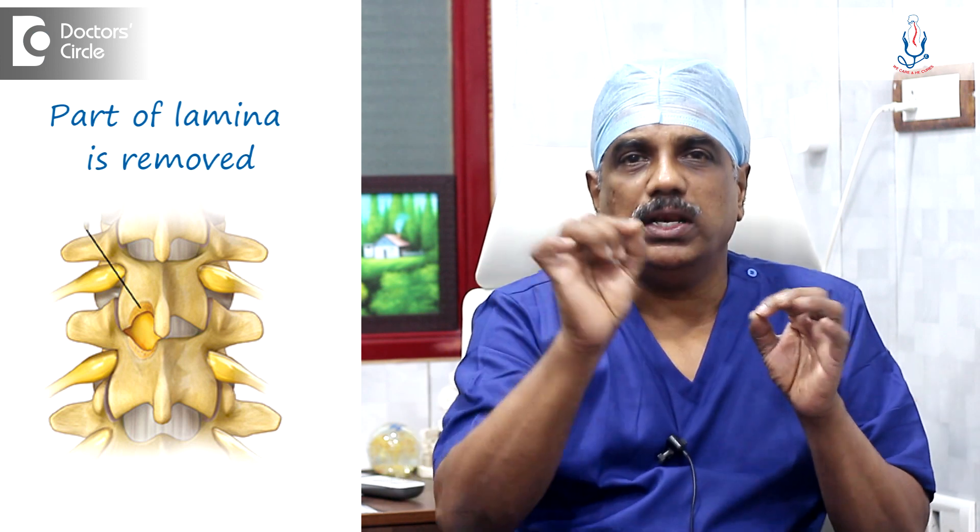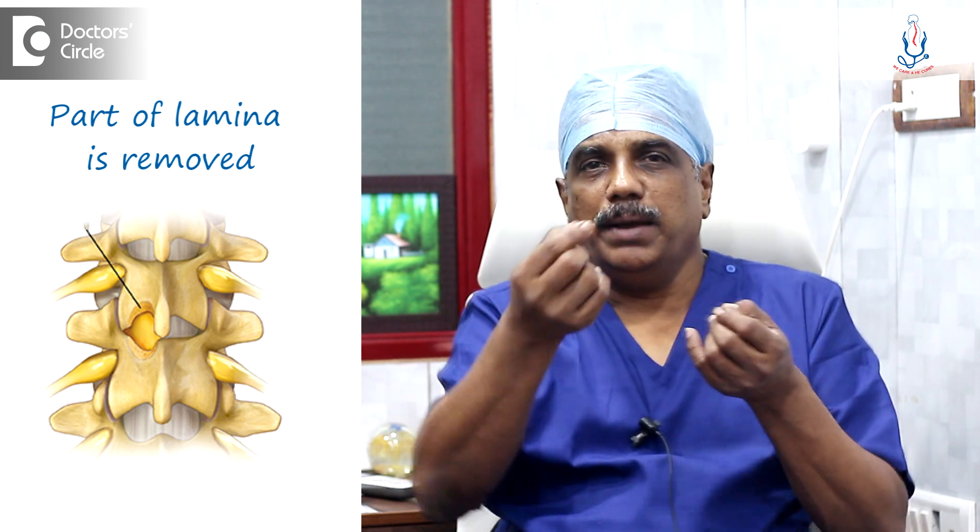So microdiscectomy — we usually use a microscope. Using the microscope, we go in a minimally invasive approach and we just remove a part of the lamina — upper lamina and part of the lower lamina — and we remove the ligamentum flavum in between. Then we have direct access to the spinal cord or to the spinal nerve roots.